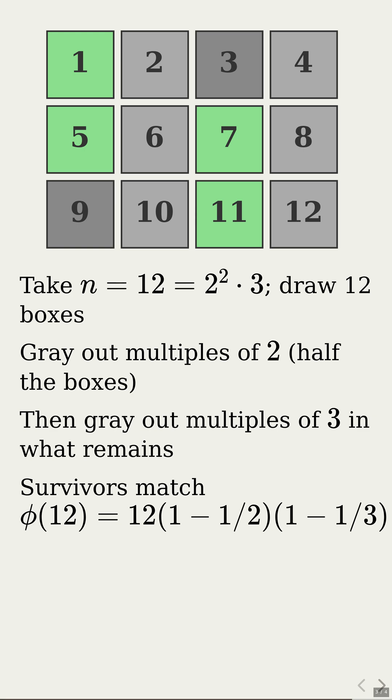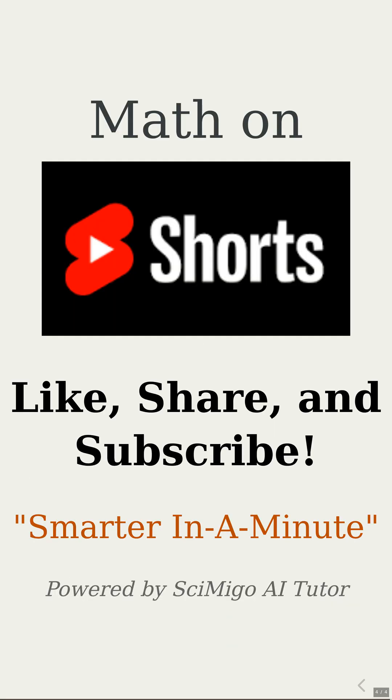So phi of n really is n times the product of 1 minus 1 over p for every prime dividing n. And here's the wild part: Euler's totient shows up everywhere in modern cryptography. Follow to see how this ancient idea protects your messages today. Please like, share, and subscribe.